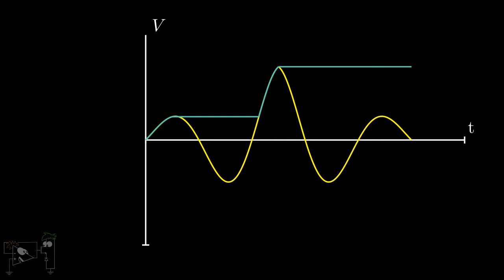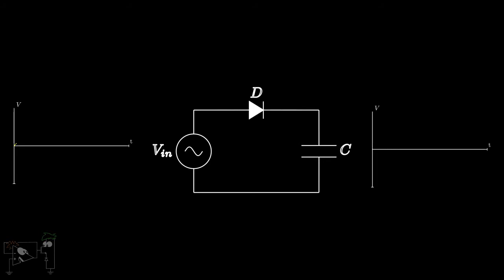The simplest peak detector can be built by just connecting a diode and a capacitor in series. Assume zero initial charge on the capacitor. Now, when a positive input is applied, the diode becomes forward biased and hence starts conducting. Hence, the capacitor is charged to the peak value of the input signal.